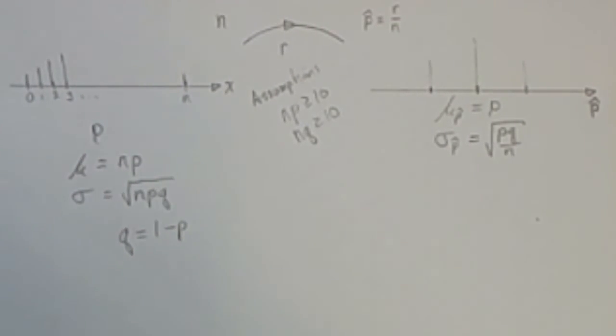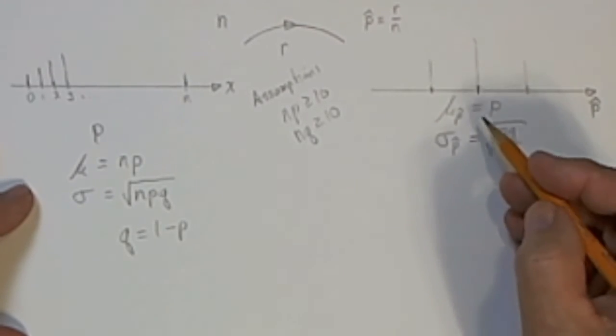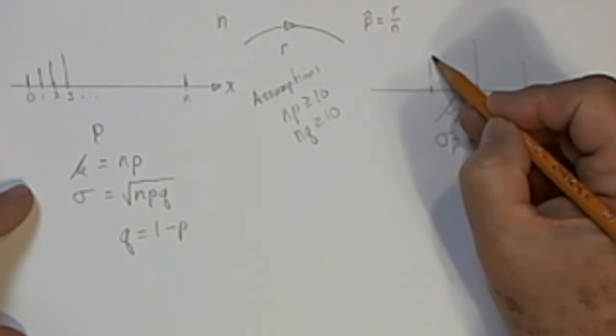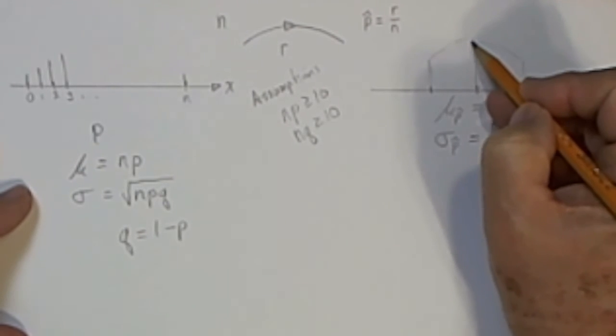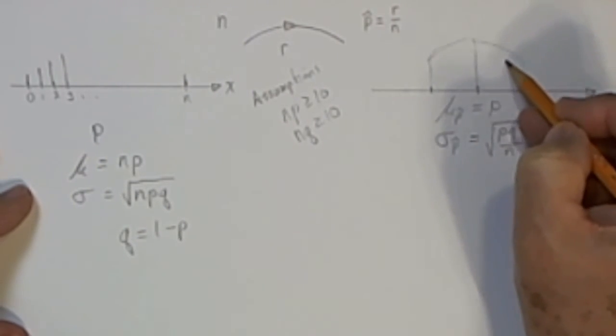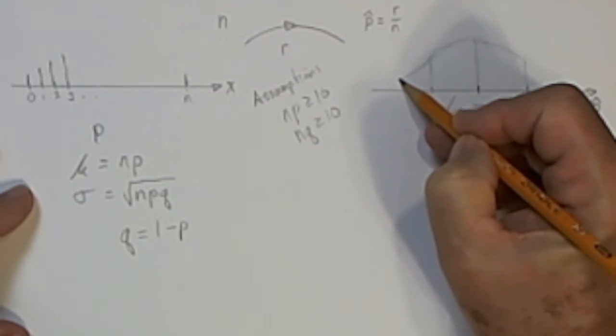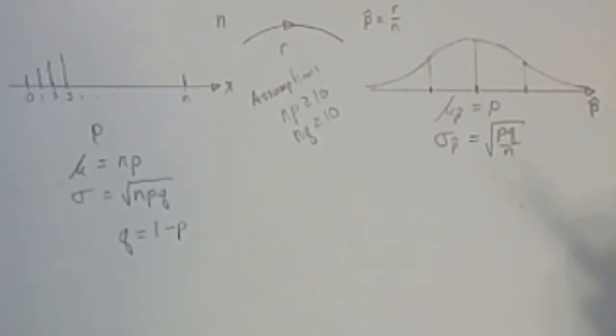We can produce a fairly accurate graph of this normal distribution, because we know that within one standard deviation the graph is concave down, and outside of that it's concave up. The p-hat from our one sample ends up somewhere on this number line.